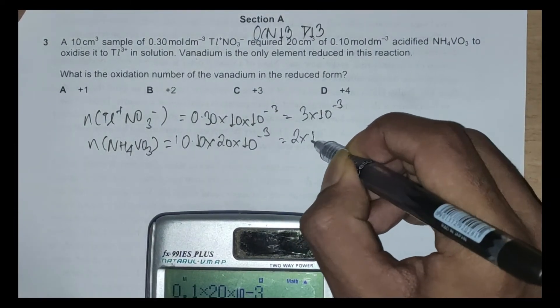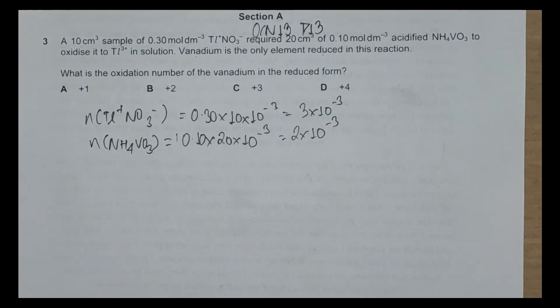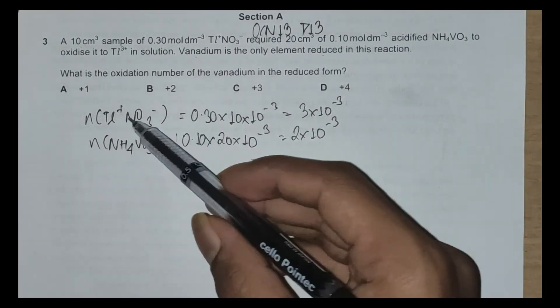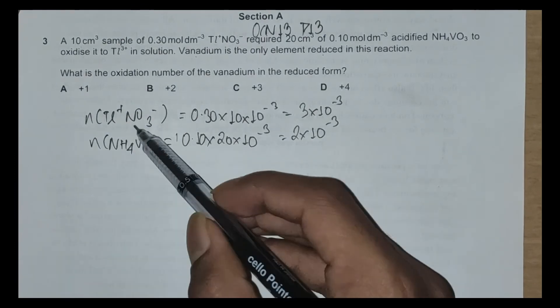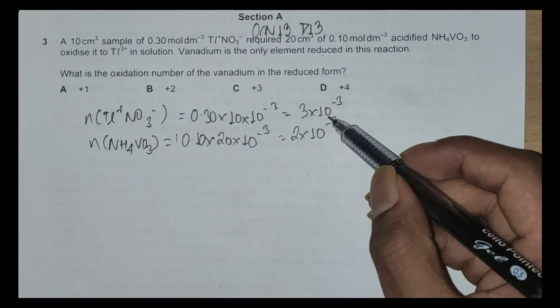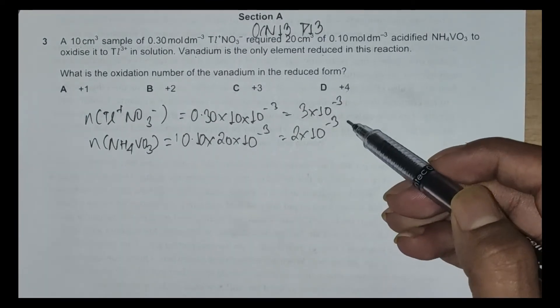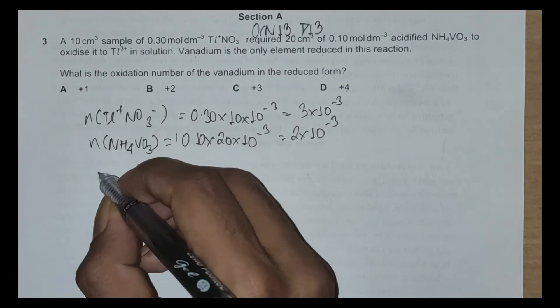Now in this question we are only concerned with the mole ratio, so the mole ratio of TL⁺NO₃⁻ to NH₄VO₃ is 3 to 2, because taking ratio means we could just cancel out 10⁻³ in both the answers.